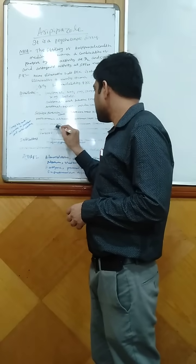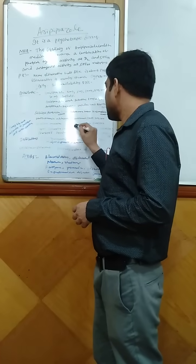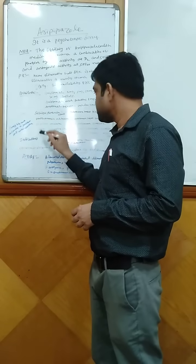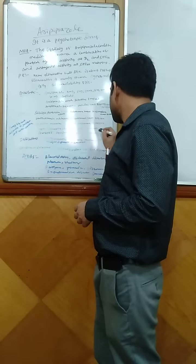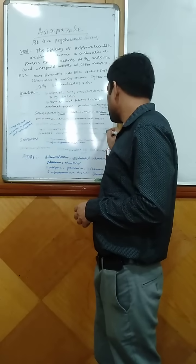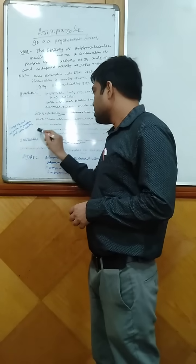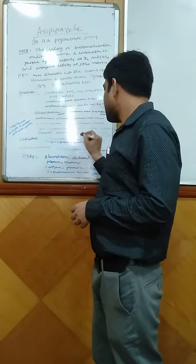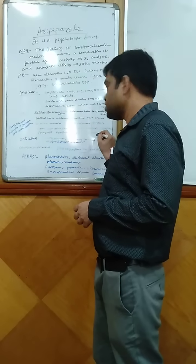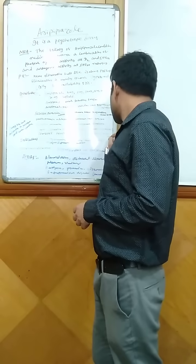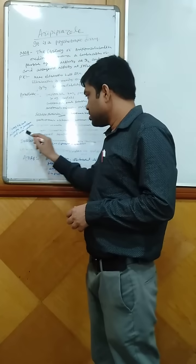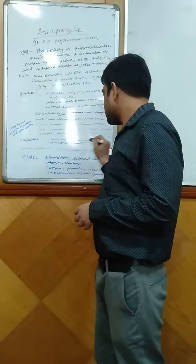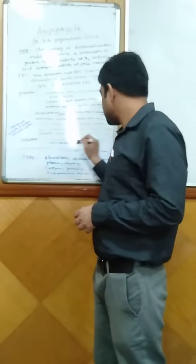In case of bipolar mania, tablet REP prazel 15mg per day. In case of major depressive disorder, the dose is tablet REP prazel 2.5mg per day. In Tourette syndrome, tablet REP prazel 2mg per day. Indications are schizophrenia, Tourette syndrome, major depressive disorder, etc.